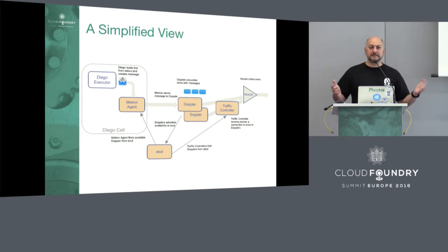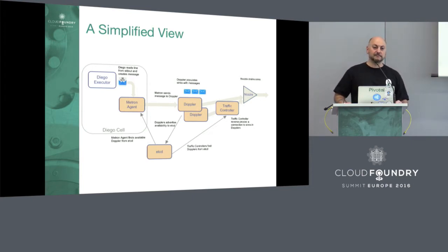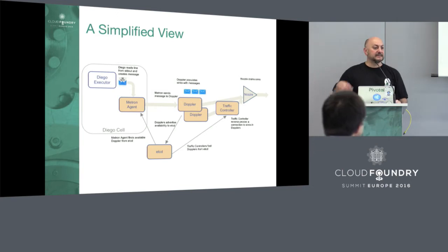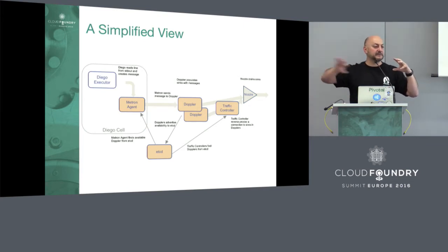Whether you're running DEA or Diego, you have the same thing here. On each individual cell, you have one component called Metron — this is in the host cell, not part of the containers. If you're using Diego, it has a piece called Executor that will start reading off from the containers — each line out of standard error or standard out — put it into an envelope, and send it to the Metron component on that cell. Metron then sends that packet out over to a collection of servers we call Dopplers. With LoggerGator, you have two different things: sending information from the cells, and then people consuming from that middle tier, the Doppler layer.